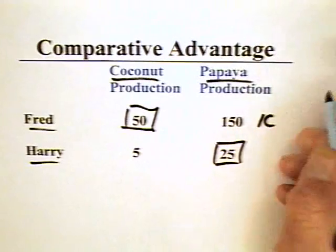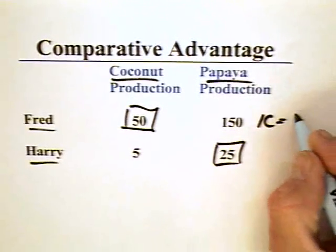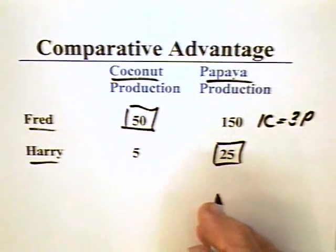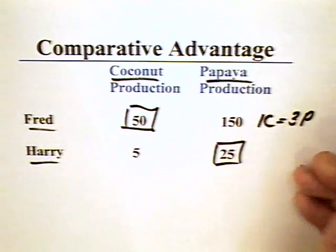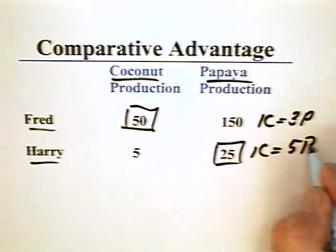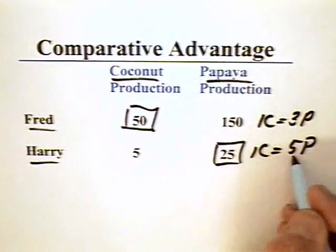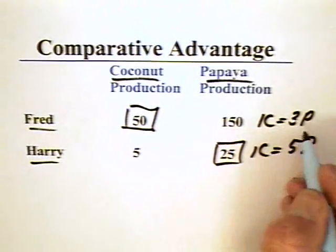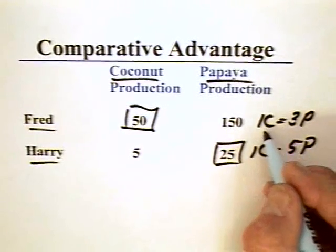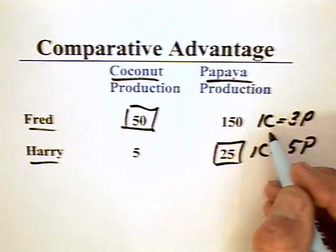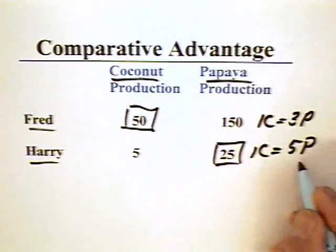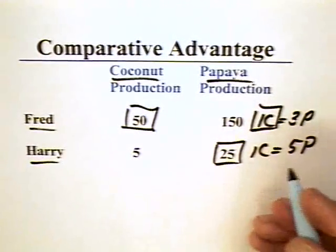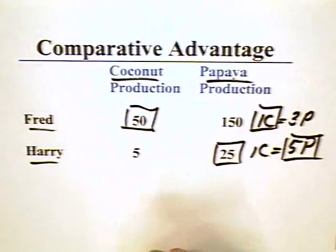We can demonstrate that by saying that Fred can produce one coconut in the time that he can produce three papayas. So if Fred produces one coconut, Fred gives up three papayas — three papayas is the cost to Fred of one coconut. One coconut to Harry, on the other hand, costs five papayas. The cost of one coconut to Fred is three papayas, so Fred can produce coconuts more cheaply than can Harry. By the same token, every time Fred produces a papaya, Fred gives up one-third of a coconut. Every time Harry produces a papaya, Harry gives up one-fifth of a coconut. So coconuts are relatively less costly for Fred to produce, and papayas are less costly for Harry to produce.